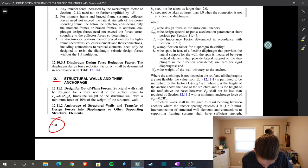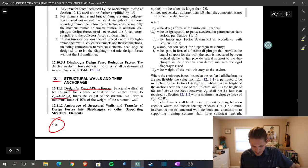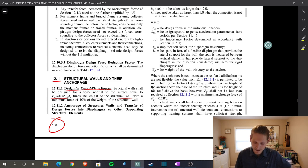And you'll notice the first section is design of out-of-plane forces. Oh, my God. We're there. So, structural walls shall be designed for a force normal to the surface equal to F sub P, which we know we had, equal to 0.4 S_DS times your importance factor, times the weight of the structural wall with a minimum force of 10% of the weight of the structural wall. So, let's use that equation and jump back.